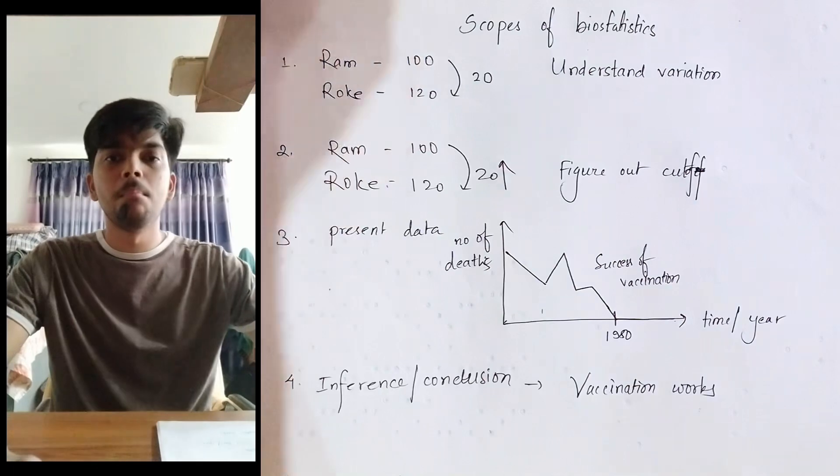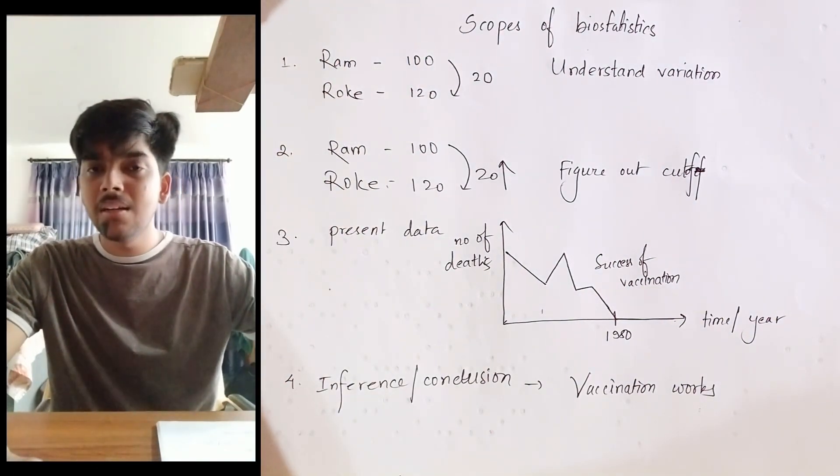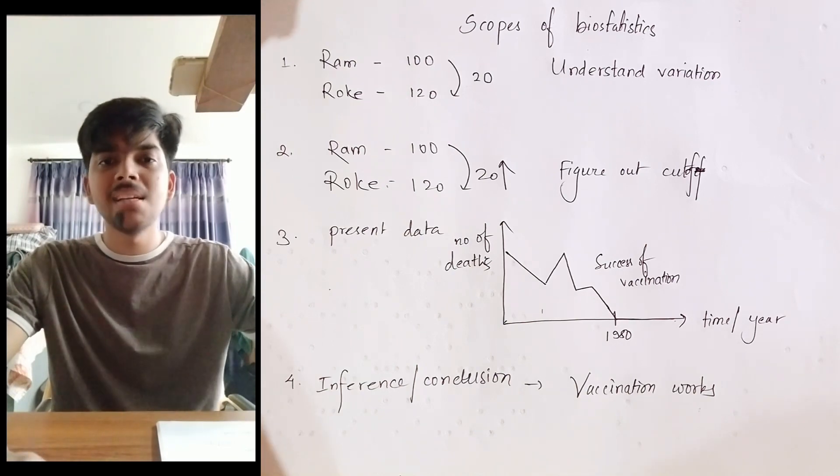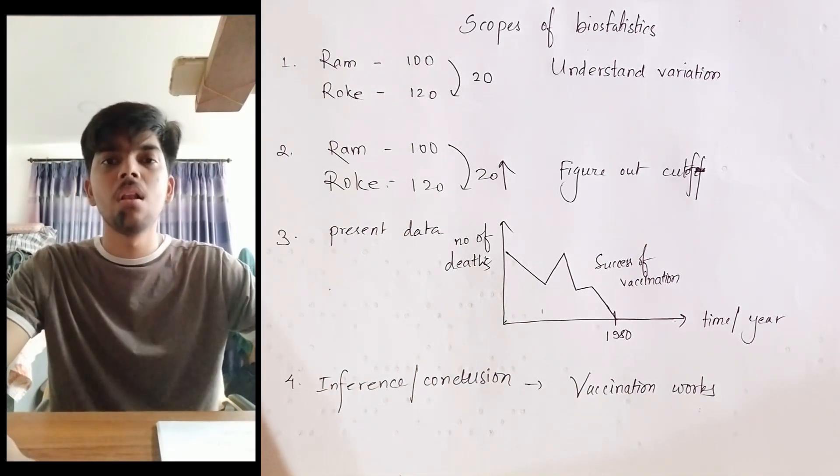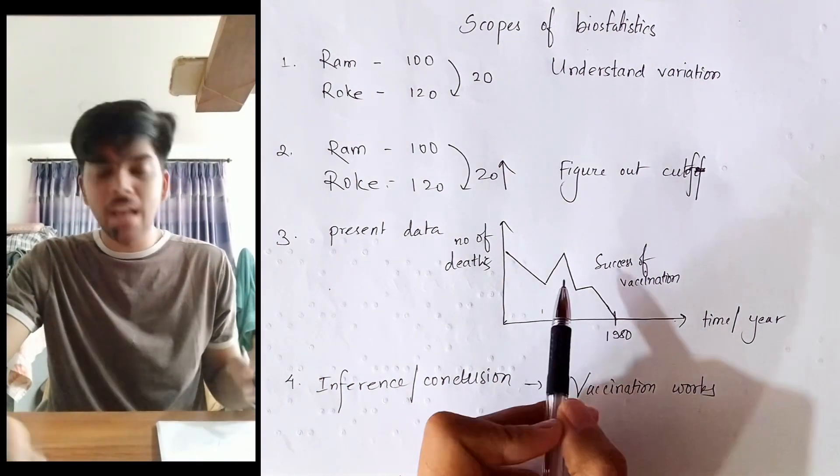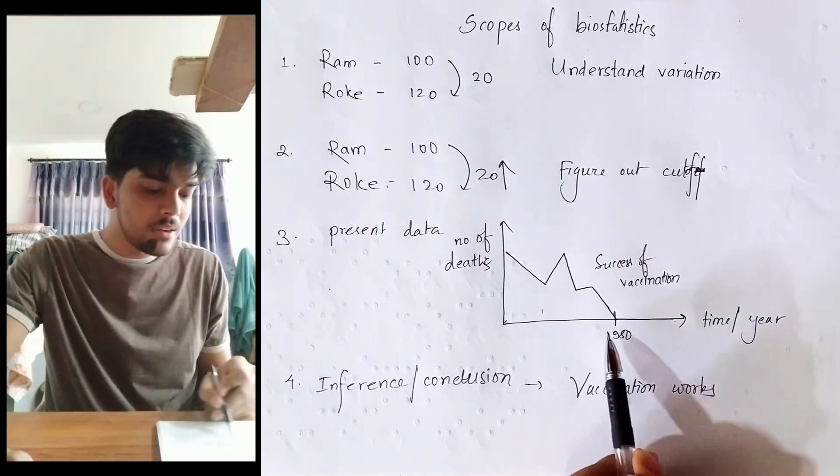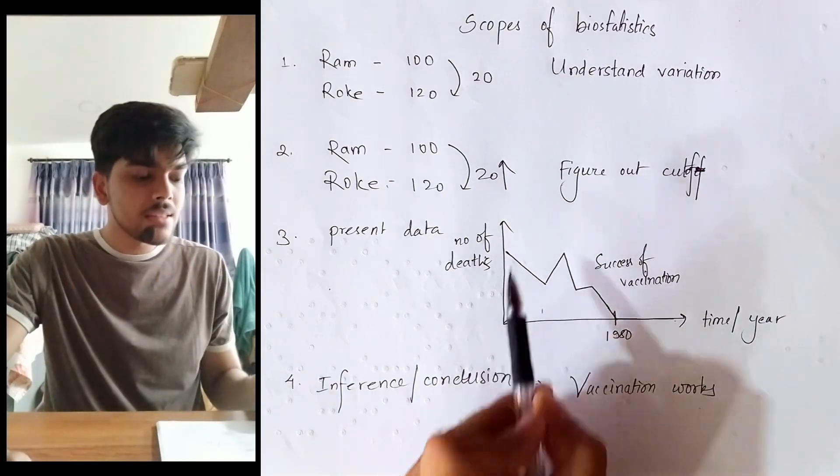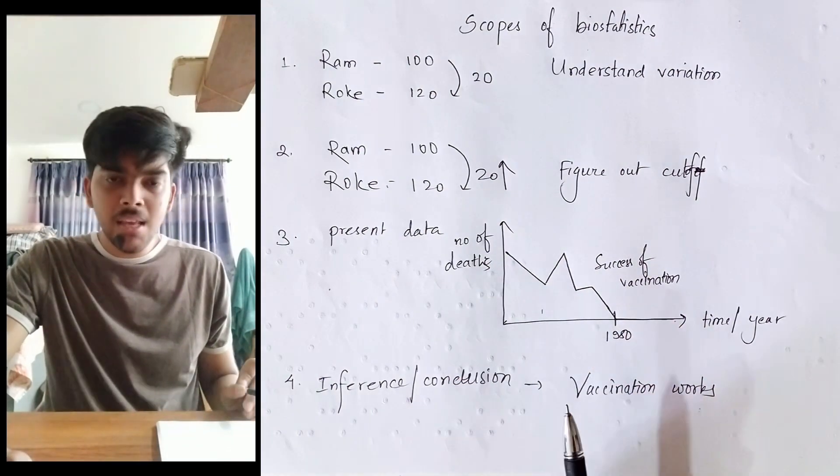Number three: biostatistics is used to present data. And it is with the help of proper presentation of data, we are able to conclude many things and gain a lot of information. Let's look at this graph. This graph presents some data. In this graph, the x-axis contains the year and the y-axis contains number of deaths due to smallpox.